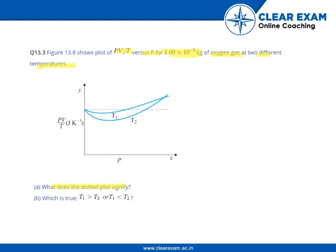We have to answer the following questions: what does the dotted plot signify, and which one is true - is T1 greater than T2 or T1 less than T2?